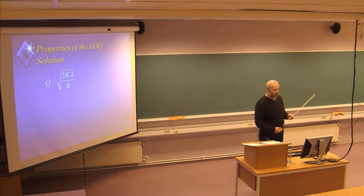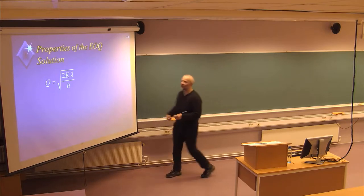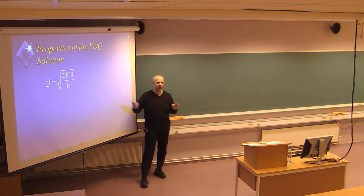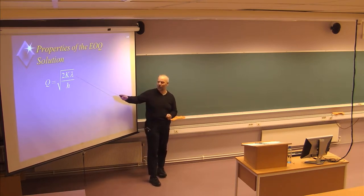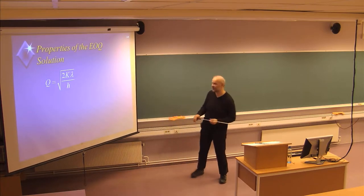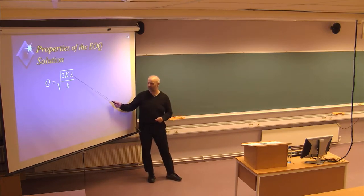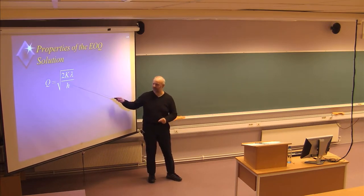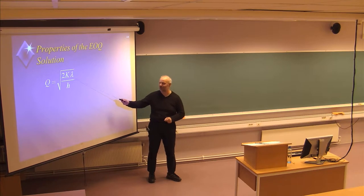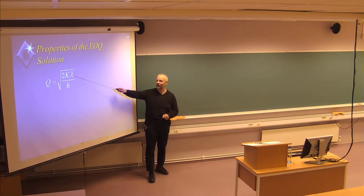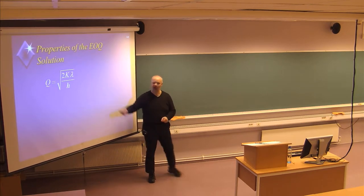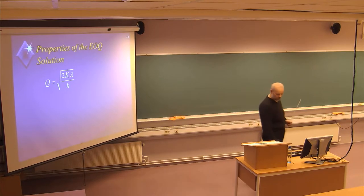The EOQ formula, also called Wilson's formula, looks like this. It is two times the ordering cost — the cost of placing one order — multiplied by the annual demand, divided by the holding cost. You have to make sure you're using the same time period for these two parameters. Then take the square root of this expression to find the optimal order size in the simple EOQ situation.